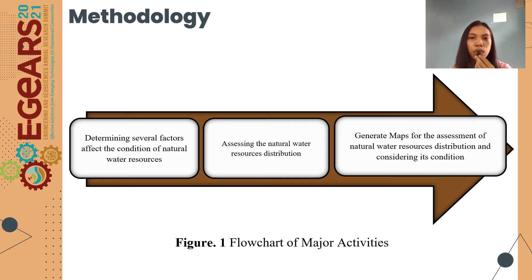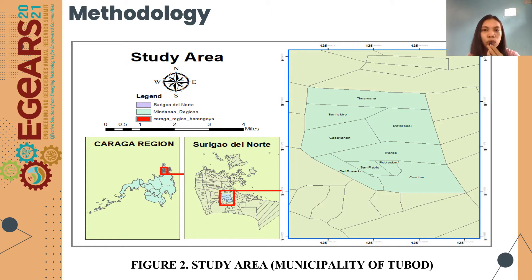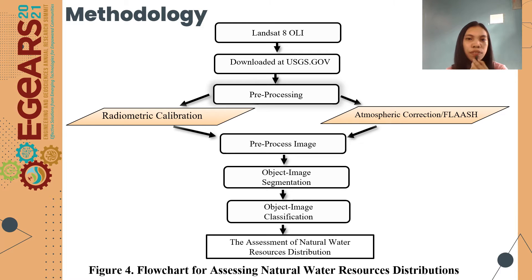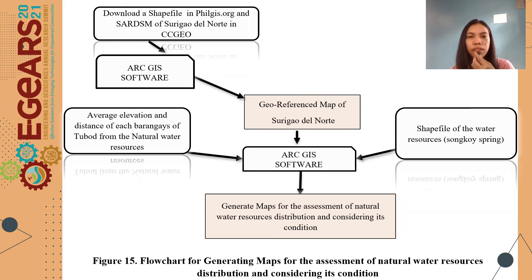Figure 1 shows the general flowchart of major activities in our study. Figure 2 shows the study area of the said municipality. Figure 3 shows the flowchart for determining the several factors affecting the condition of natural water sources distribution. Figure 4 shows the flowchart for assessing the natural water sources distribution. Figure 15 shows the flowchart for generating maps for the assessment of natural water sources distribution and considering its condition.